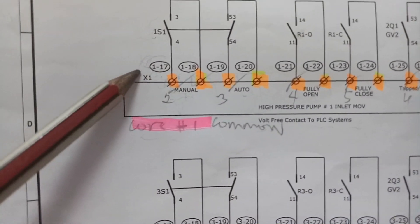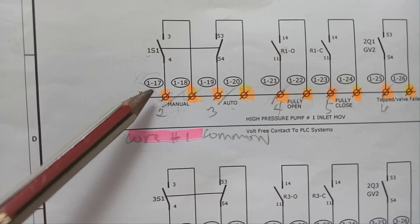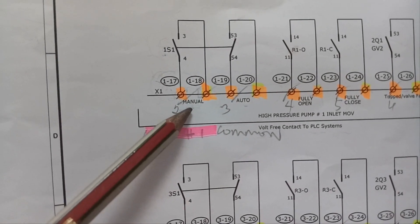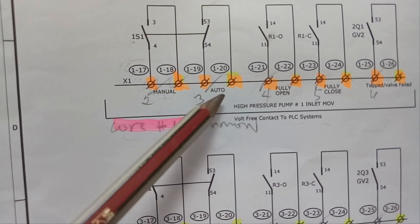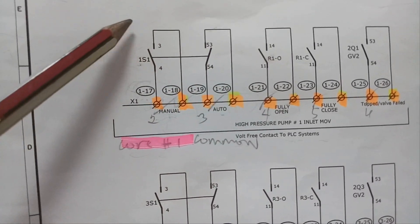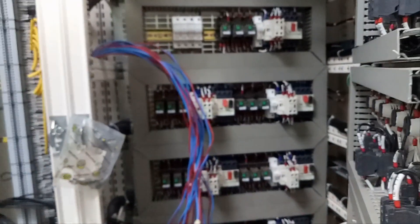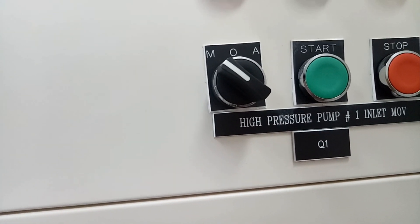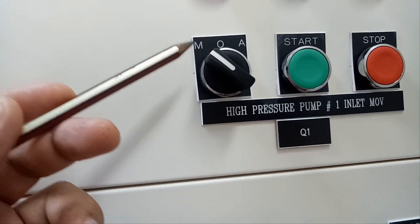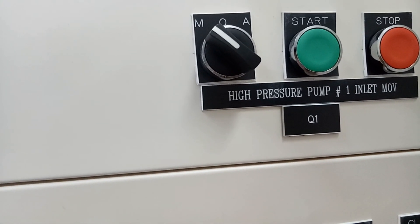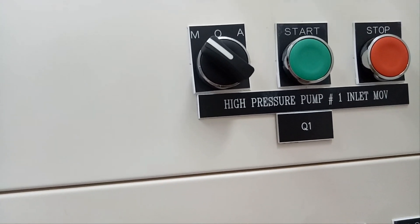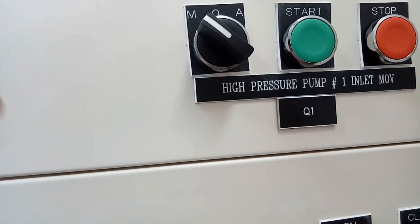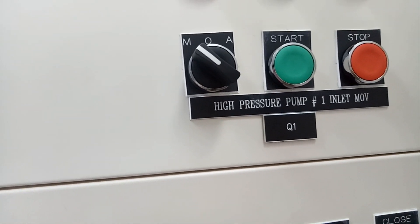So ang halimbawa po natin ay 1-17. Ang 1-17 ibig sabihin po ay manual mode ng selector switch. Ang selector switch po na ginamit dito ay mayroon po siyang 3 position o 3 mode: manual mode, off mode, at auto mode. Makikita po natin itong selector switch na ito dito po sa front side ng ating MCP o main control panel. Sa previous video tutorial po natin ay mayroon po tayong tutorial tungkol sa selector switch — panoorin po ninyo at matututunan po ninyo doon kung paano mag-analyze at kung paano i-connect yung selector switch doon sa existing schematic diagram ng control circuit.